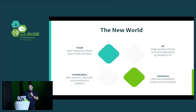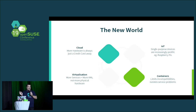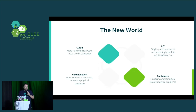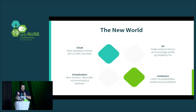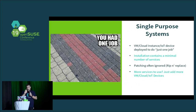This is the new world we're living in today. Virtualization is part of this story. When you have a new service, do you add it to an existing VM or spin up a new VM? More and more, you're probably spinning up more VMs — especially with cloud. Containers live this life, IoT lives this life. More and more, you end up with systems deployed to do just one job — a single-purpose system containing the minimum amount of binaries needed.